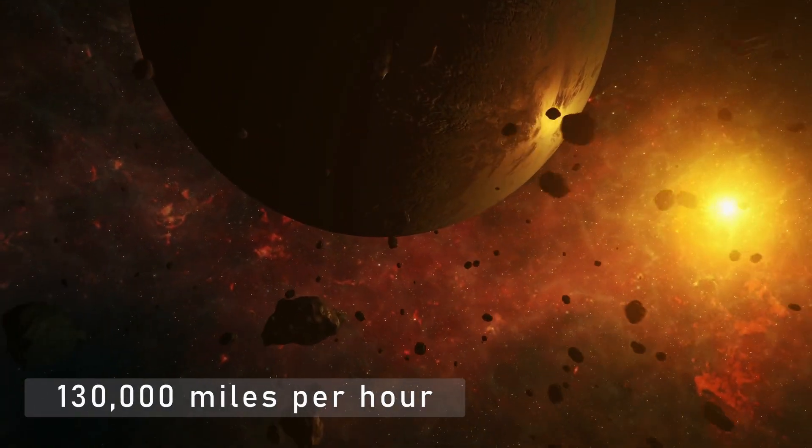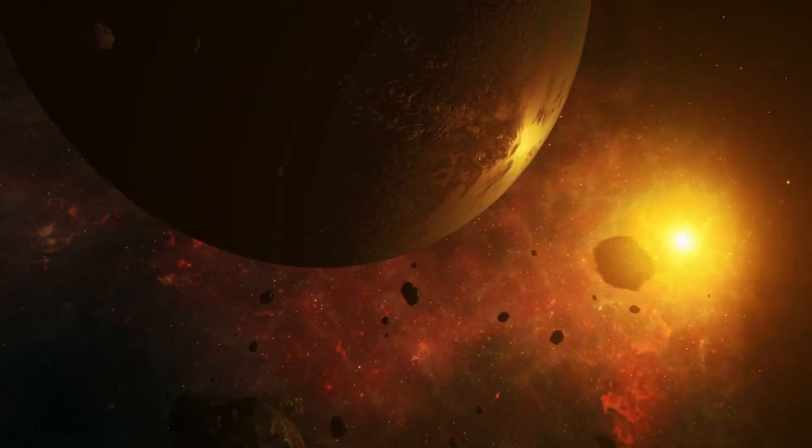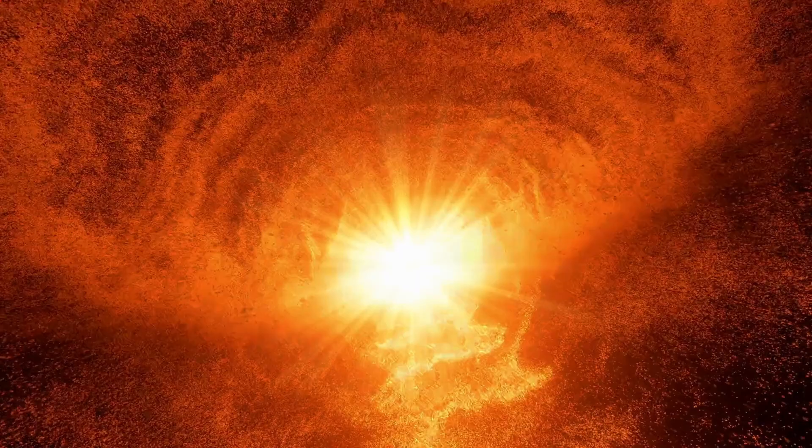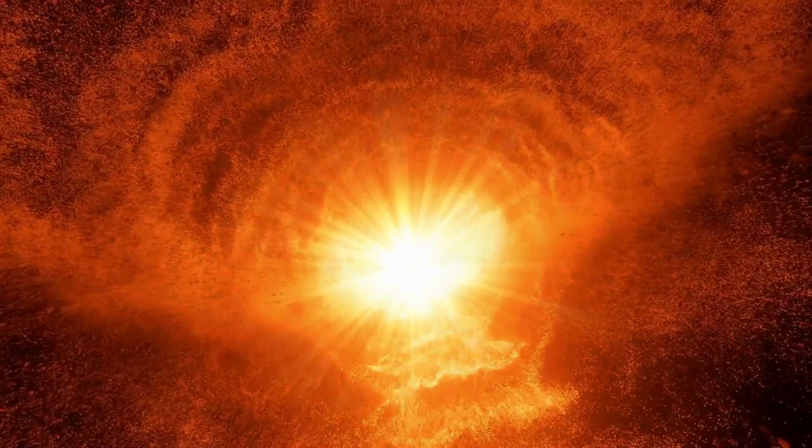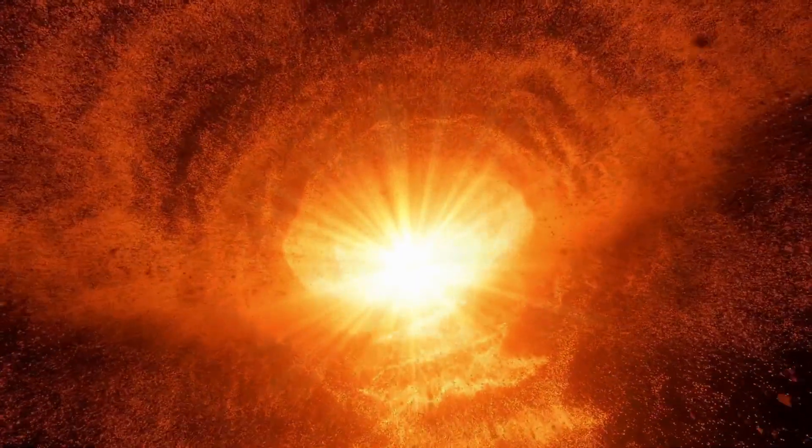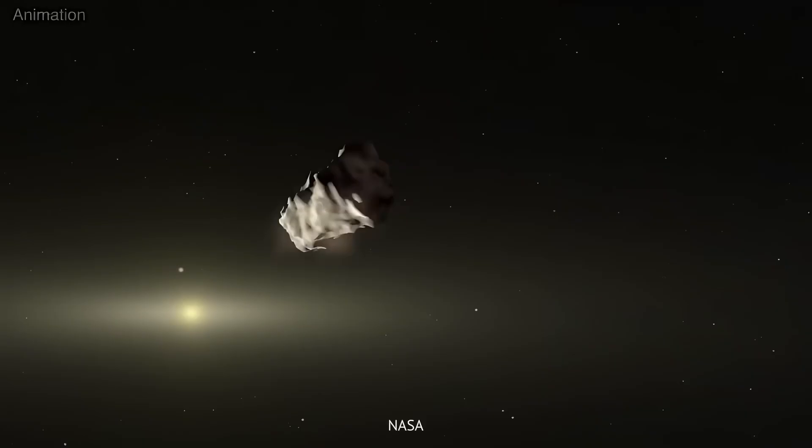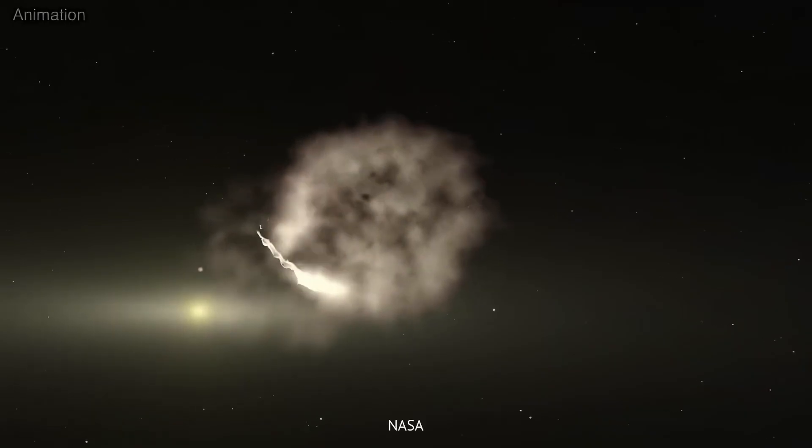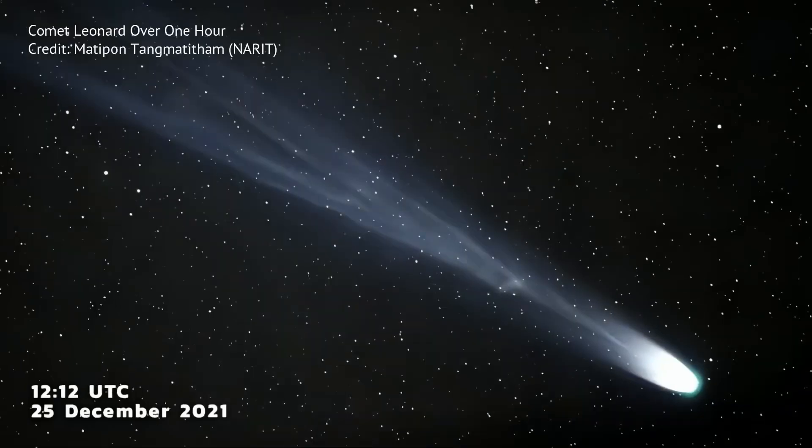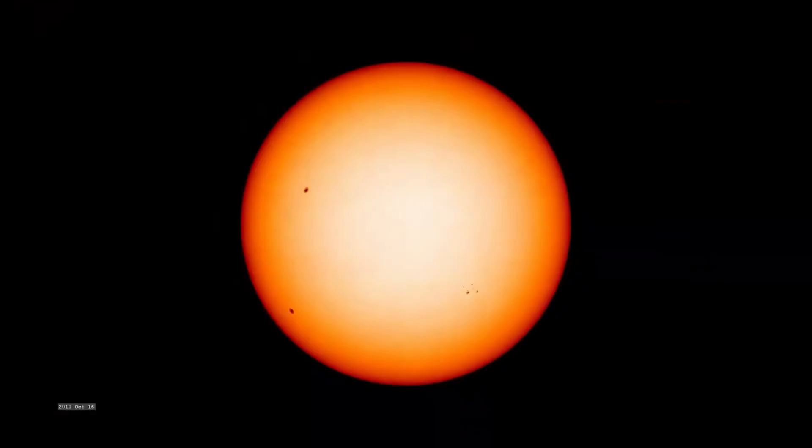Moving at over 130 miles per hour, it dove straight through the heart of solar chaos, right when the Sun was at its most violent in over a decade. Solar maximum, magnetic storms, coronal mass ejections tearing through space.